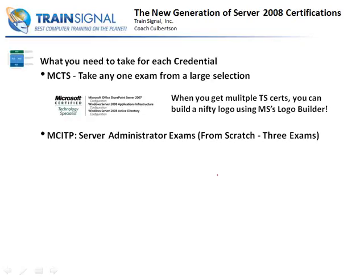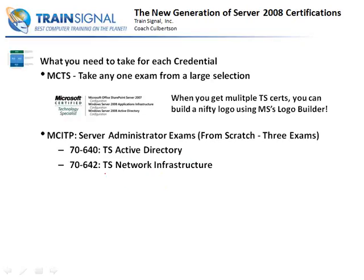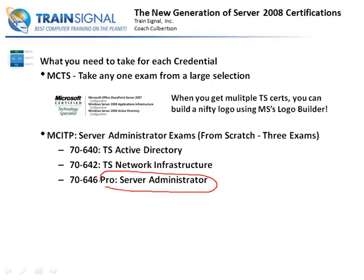Let's talk about the MCITP Server Administrator. If you want to grab this one, you need to take three exams: the 7640, which is Active Directory — all about user accounts and whatnot; the TS Network Infrastructure, which is all about DHCP and DNS and network goodies; and then the 7646, which is the Server Administrator exam — the pro-level exam. You can take these exams in any order, but you have to complete all three. Just taking the 646 alone doesn't do the job; you've got to take all three if you're doing it from scratch.